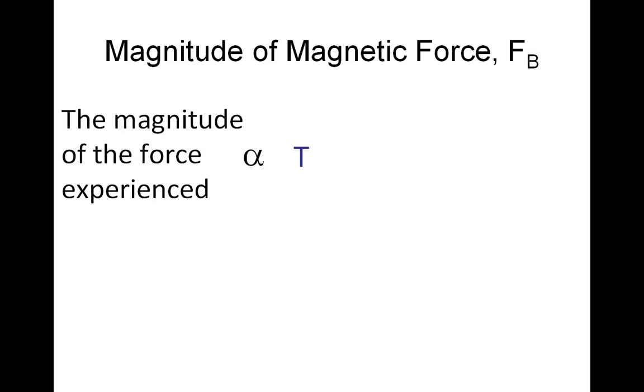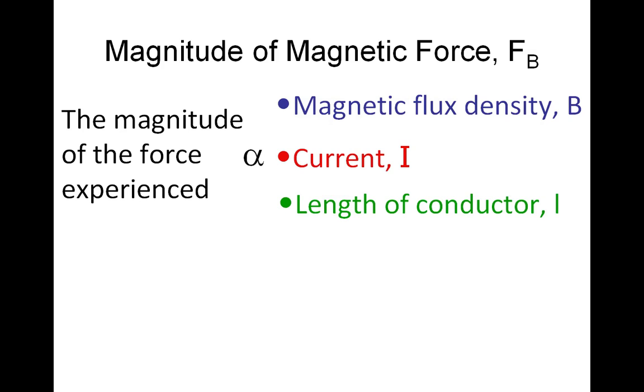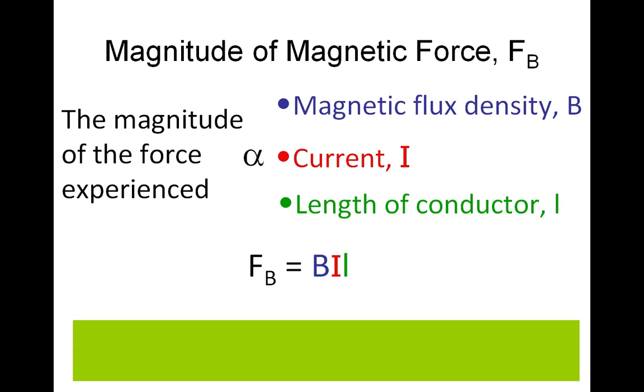The size of the force is proportional to the two fields that combined with each other. Those two things are the flux density and the size of the current. The other important thing is the length of the conductor that's in the field. We get the magnetic force F equals BIL.